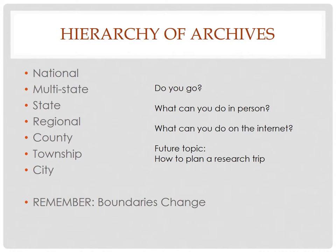There is a hierarchy to the archive system in the United States. There are national archives, multi-state, state, regional, county, and in some cases township or borough, and city. One thing you have to keep in mind is that boundaries have changed over time. So it's important to decide what you can do in person versus what you can do over the internet. We're going to talk in a future topic about how to plan for a research trip, but today we're going to talk about the hierarchy and where you can find things.